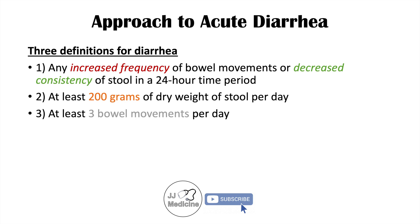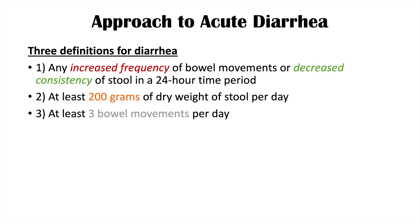The third definition is having at least three bowel movements per day. This is similar to the first definition and easier to use because it has a number associated with it. However, some individuals at their baseline may normally have three bowel movements per day, so this can be difficult to use as well. Usually you'll see a combination of these types of definitions.